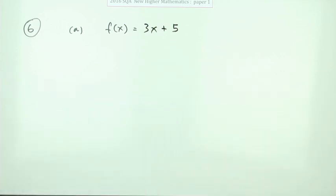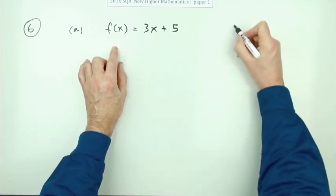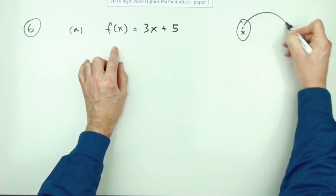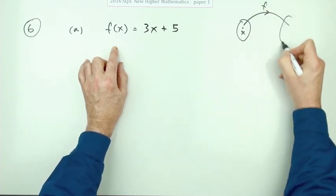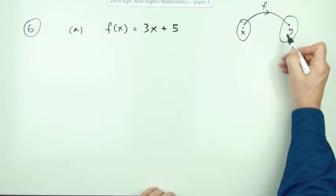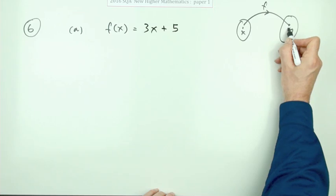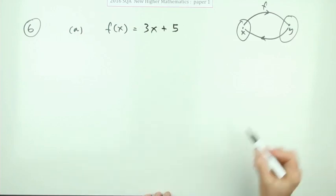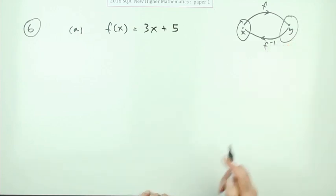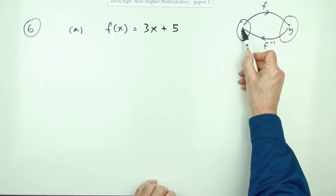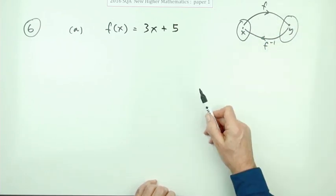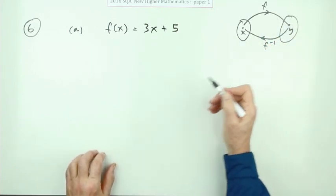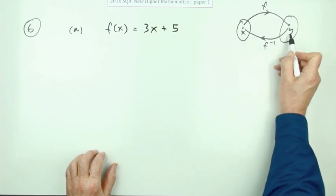There are a couple of ways of doing this. Remember a function takes a set of starting numbers — the domain, usually called x — applies some rule, and obtains a set of answers — the range, usually called y. The inverse function takes you back to the start: given the answer, how do you obtain the number you started with? For that to work, each starting number can only go to one answer, and each answer can only have come from one starting number.